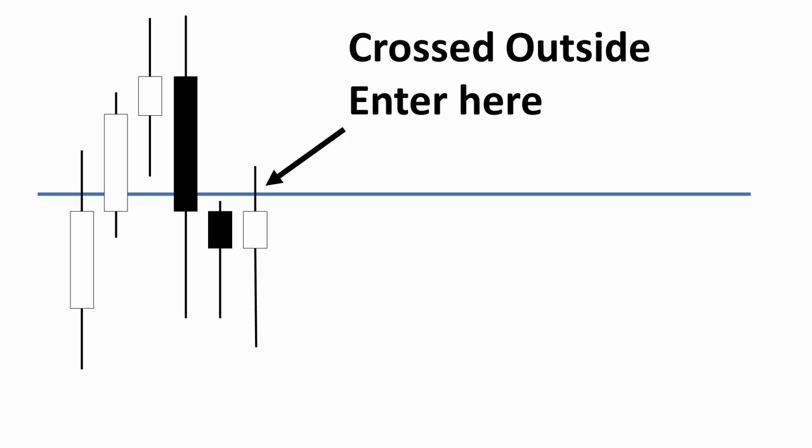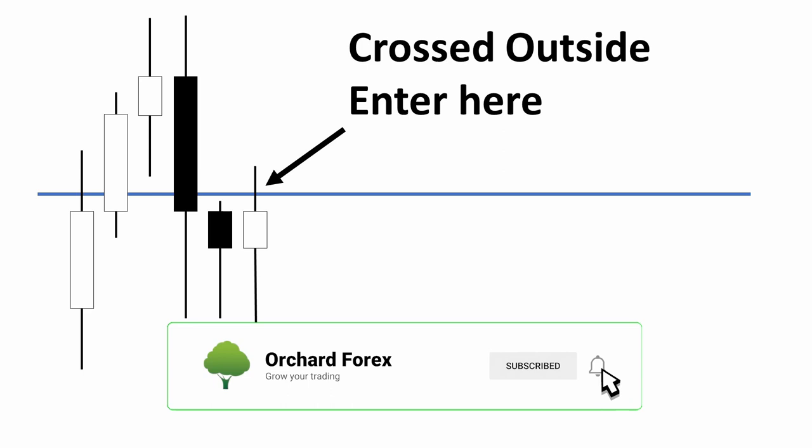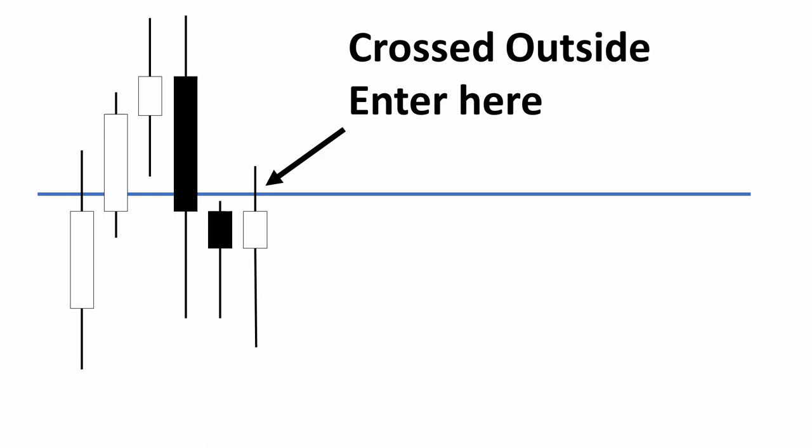There are variations: you may decide to wait for the price to close outside and then trade as soon as it touches coming back in, looking for a bounce. Or you may want to wait for a third bar to close outside, or require bars to be consecutive — I'll be allowing them to happen at any time. But this is my rule set, and the hard part is just deciding on yours.